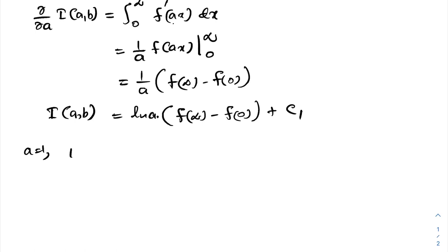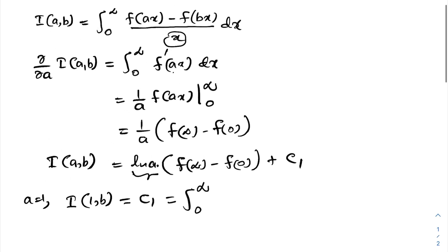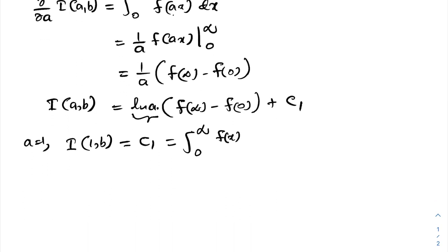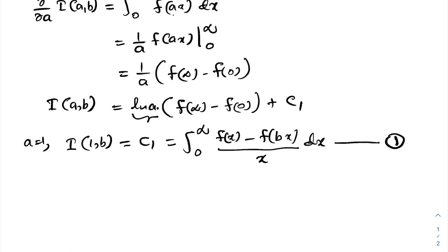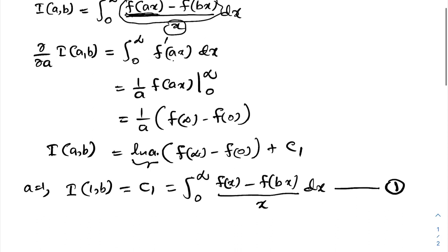When a equals one, ln(1) equals zero, so I(1,b) equals C₁. We can also write I(1,b) as the integral from zero to infinity of [f(x) minus f(bx)] over x dx. I'll call this equation number one.